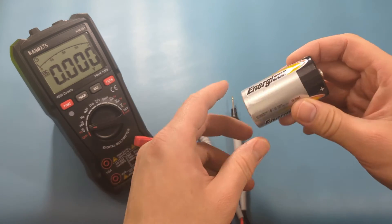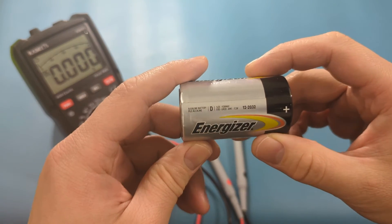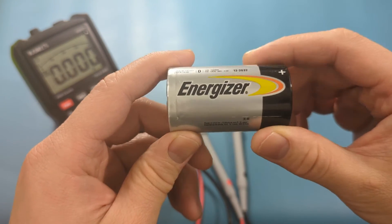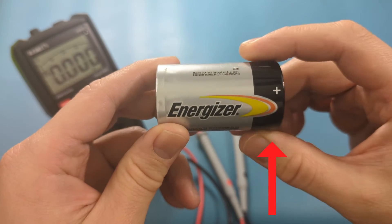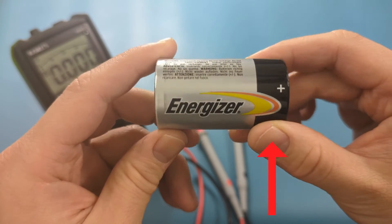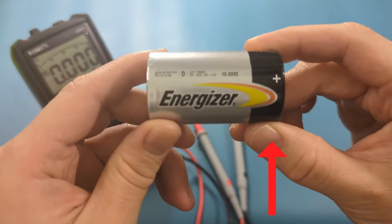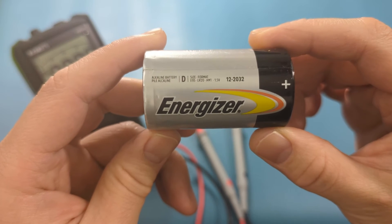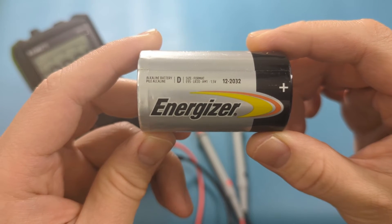The positive end of the D battery is the flat side with a small button on top. As indicated on the D battery, it is rated at 1.5 volts.